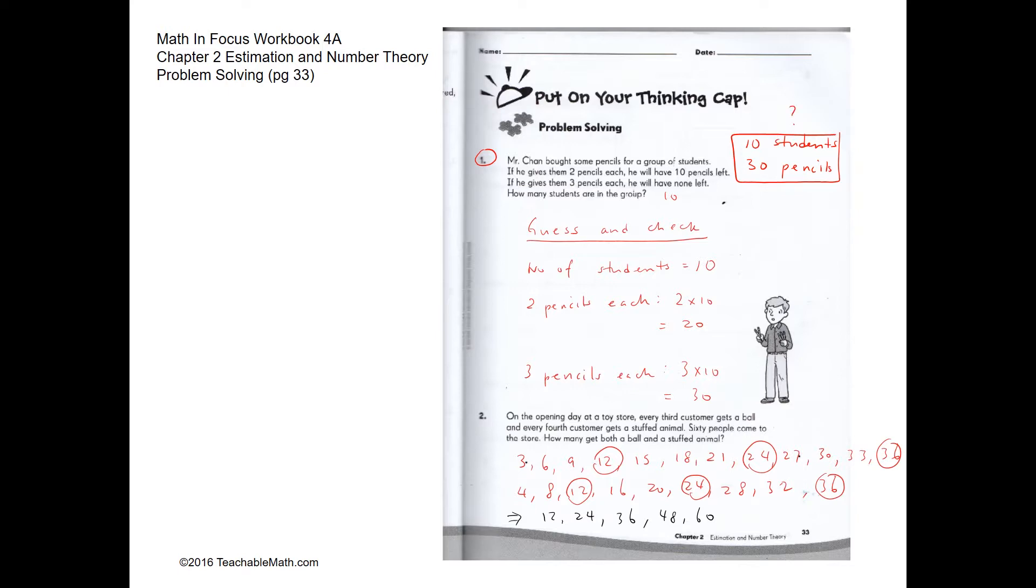Let's see whether that's correct using guess and check. Number of students is 10. If he gives 2 pencils each, 10 students times 2 is 20 pencils, and there will be 10 pencils left, which is correct. If he gives them each 3 pencils, 10 students times 3 is 30 pencils, and there will be none left over. So this is correct.